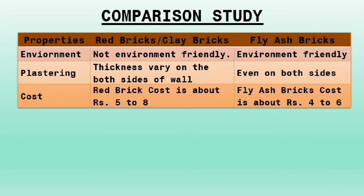Environment: red bricks or clay bricks are not environment friendly, while fly ash bricks are environmentally friendly. Plastering: thickness varies for both sides of the wall for red or clay bricks, while fly ash bricks are even on both sides. Cost: red brick cost is about 5 to 8 rupees, while fly ash bricks cost is about 4 to 6 rupees.